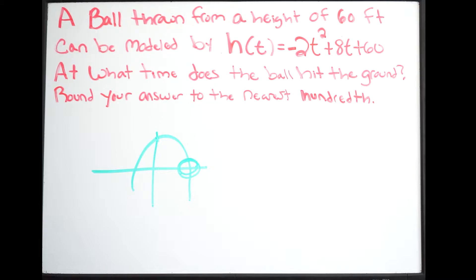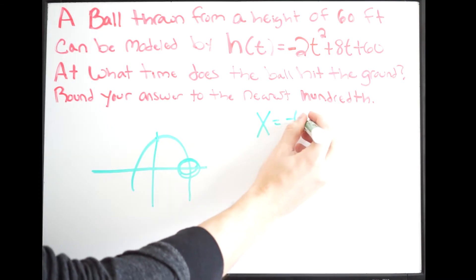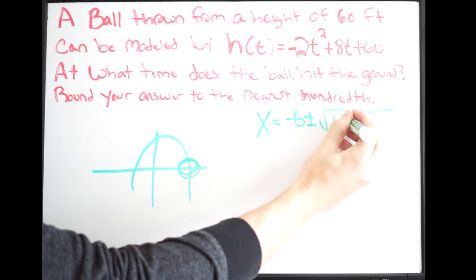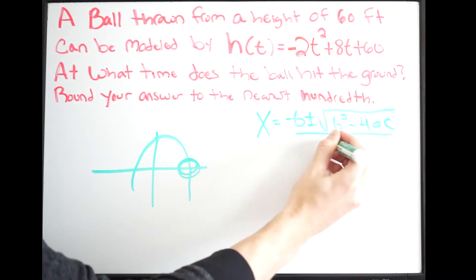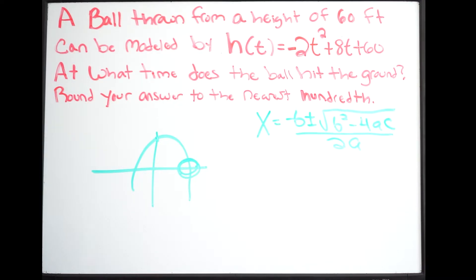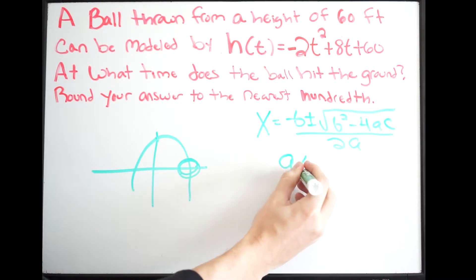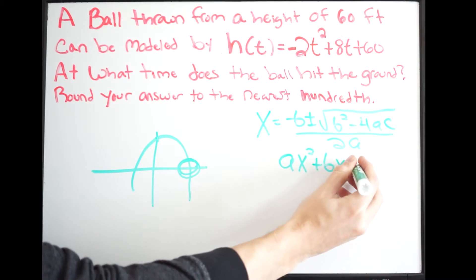We're going to use the quadratic formula. The quadratic formula is: x equals negative b plus or minus the square root of b squared minus 4 times a times c, all over 2 times a. We should also write out a quadratic in standard form: ax squared plus bx plus c.